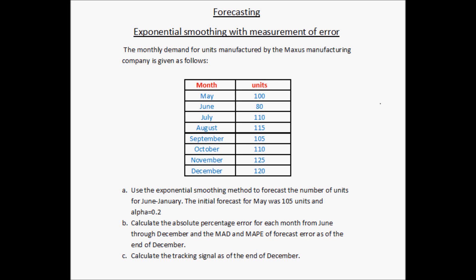Let us look at another example of forecasting. In this example, we will focus on exponential smoothing with the measurement of error. The monthly demand for units manufactured by the Maxis Manufacturing Company is given to us. We have the actuals but we want to find out what would be the forecast based on the exponential smoothing method.